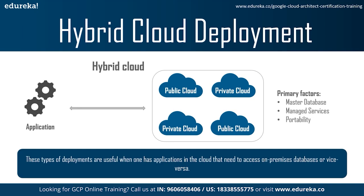Hybrid cloud deployment has three primary factors to consider. First, master database — decide whether your master database is stored on-premises or in the cloud. If on cloud, GCP resources act as a data hub for on-premises resources; if on-premises, in-house resources synchronize data to the cloud for remote use or backup. Second, managed services — available for cloud resources, comprising scalability, redundancy, and automated backups, with an option for third-party managed services. Third, portability — based on your data store type, portability is affected; use a cross-platform store such as MySQL for reliable and consistent data transfer.